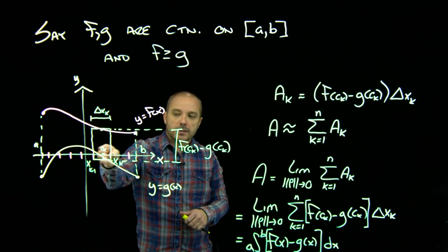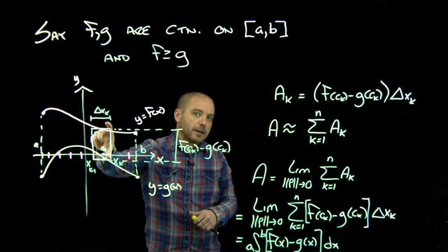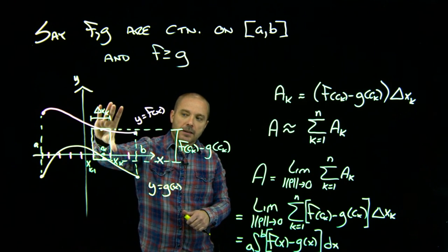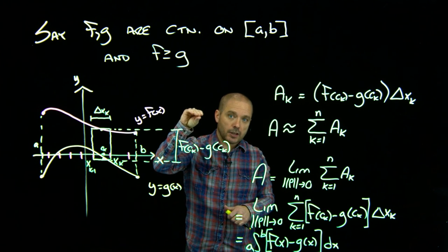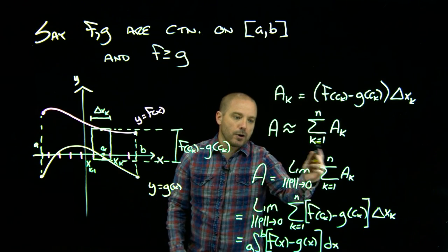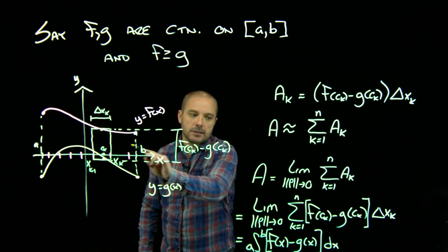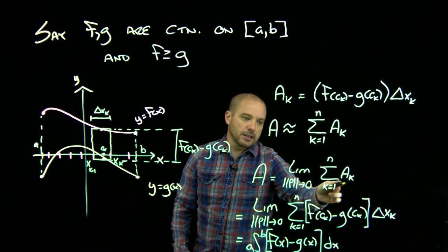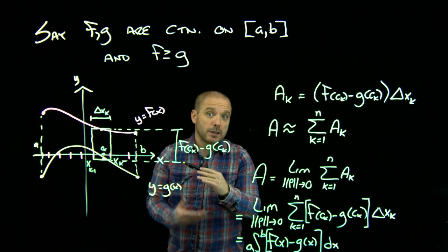So no matter what c sub k you pick, they'll all be trapped between one maximal and one minimal. And the key is that as you shrink down, both that max and that min converge on each other. But all other measures are trapped in between there. So no matter how you partition this and no matter what c sub k's you pick, all partitions, all c sub k's, this limit heads to the real area because the real area is trapped in there with all those.